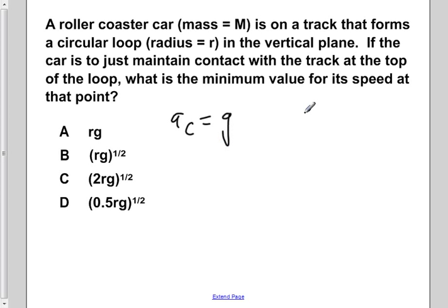But remember that the centripetal acceleration is equal to V squared over R. So now if we set that equal to the acceleration due to gravity, g, we would have V squared over R is equal to g.